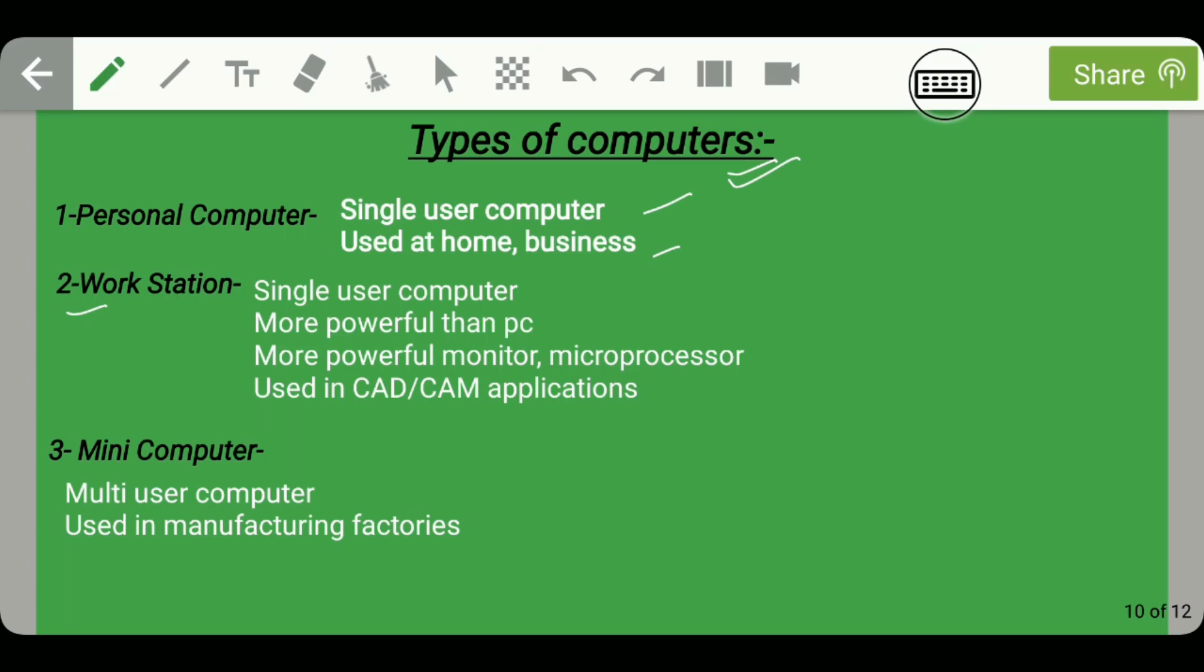The second type of computer is workstation. It is more powerful than personal computer. It has more powerful monitor and microprocessor and it is used in CAD/CAM applications and manufacturing factories.